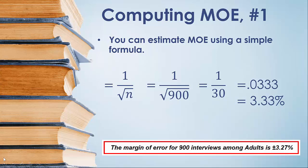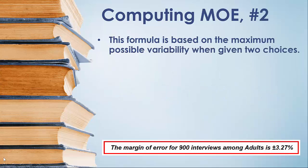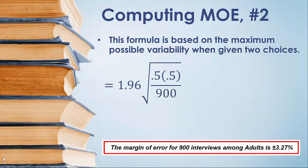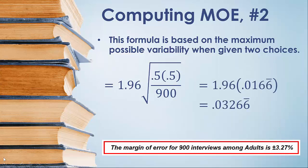If we want to get that number exactly, we need to use a somewhat more sophisticated formula. This particular formula maximizes the possible variability when given two choices, so it essentially makes the margin of error as large as it could be. When we work out the math, we end up with 0.0326 repeating, and if we move that decimal place two places to the right and round up just a little bit, we get 3.27%, which is exactly what the research report reported for the margin of error.